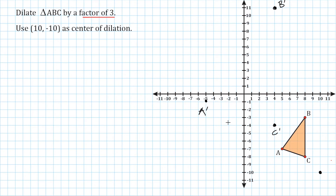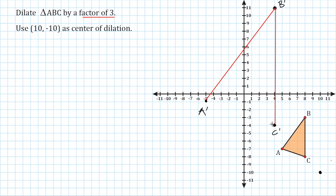Now that we have all of our new points, all we have to do is connect them and we have our dilated triangle. We go from point A to point B, then from point B to point C, and from point C back to point A. And that is our dilated triangle. So we just dilated a triangle by using slope.